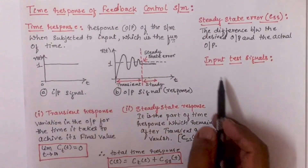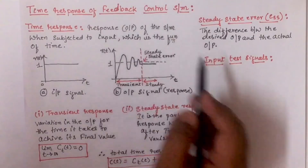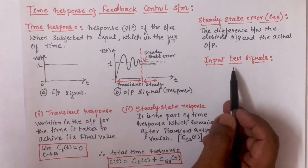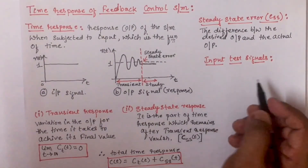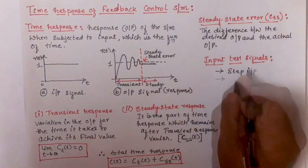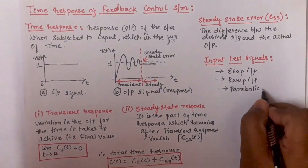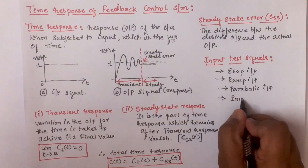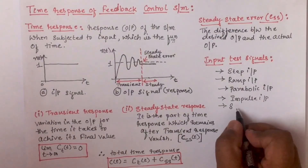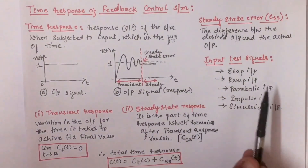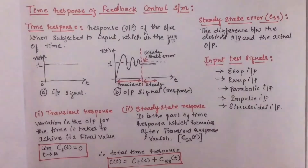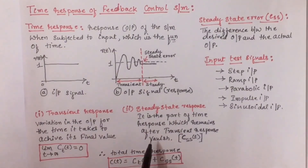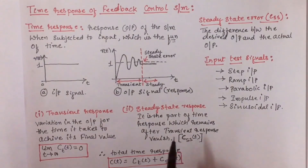There are different input signals that are used to test the control system; such signals are known as input test signals. The different input signals used to test control systems are: step input, ramp input, parabolic input, impulse input, and sinusoidal input. These are the different types of inputs used to test the control system for time response. We will discuss these in the next lecture. This is an introduction to the time response of the feedback control system. Hope you all understood the topic. Thank you.